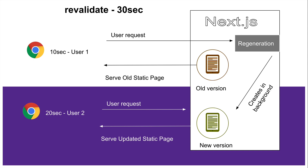Next.js creates an updated new version of the page in the background, and the first user gets the old static page. Any user that comes after — say on the 20th second or 25th second — will get the new version. Bear in mind, if you make an update to the page on the 15th second, users on the 20th and 25th second won't get that update, because we only regenerate once during the entire 30-second span. After 30 seconds the same rule applies again.